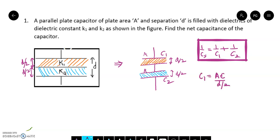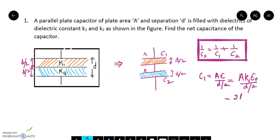We know the formula for capacitance: C equals A·epsilon upon D when there is a medium. Here the thickness is d/2, so I write d/2 in place of D. Now, what is epsilon? It is the dielectric constant times the electrical permittivity of vacuum. Here the dielectric constant is K1, divided by d/2. So I get C1 equals 2A·K1·epsilon-naught upon D. This is the capacitance of the first capacitor.